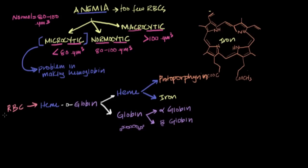What does any of this have to do with binding oxygen? Hemoglobin is what binds oxygen, and the oxygen is actually bound to the iron. So iron serves a really important role in not only the structure but also the function of hemoglobin. All microcytic anemias are due to a problem in making hemoglobin. So what are some of the different ways you could end up with a problem making hemoglobin? If you had a problem with making globin, that would lead to a problem in making hemoglobin, resulting in microcytic anemia.